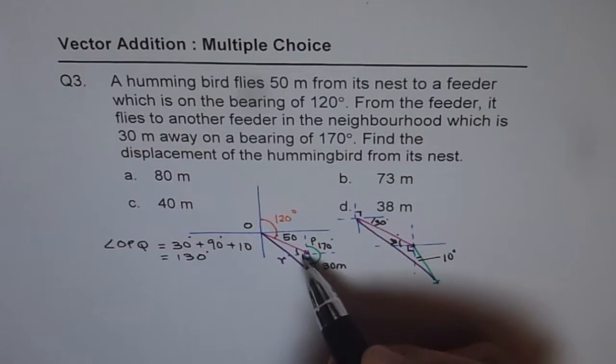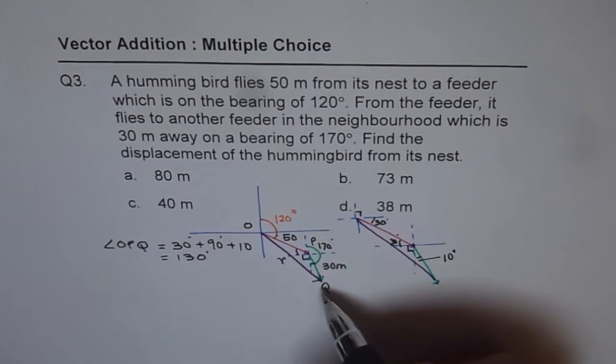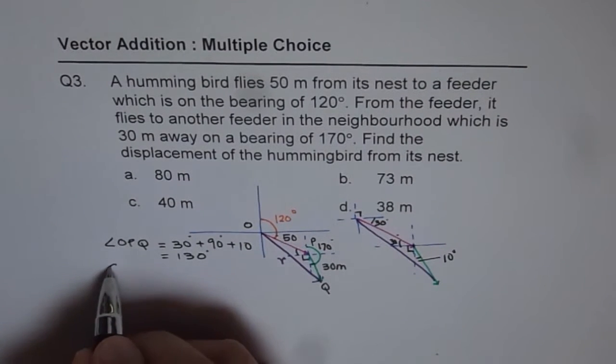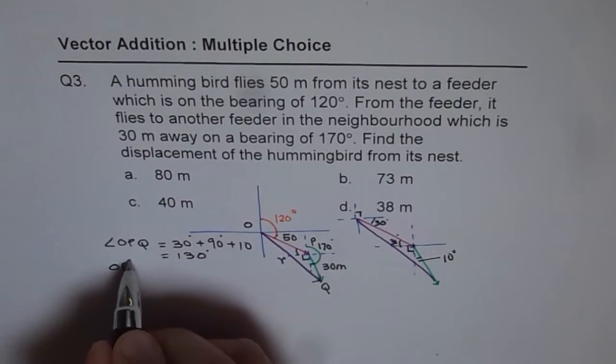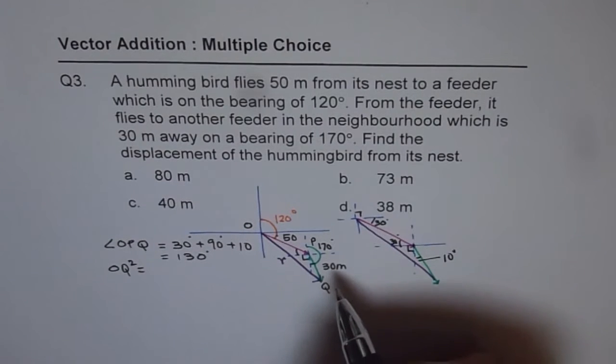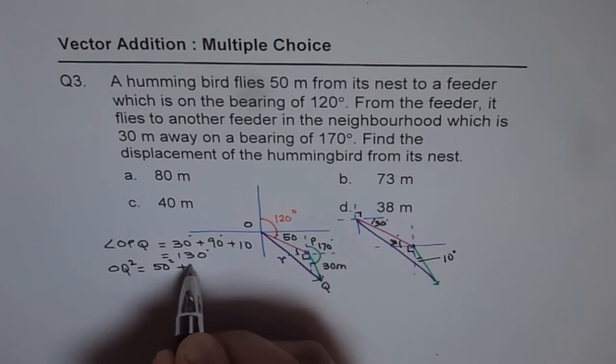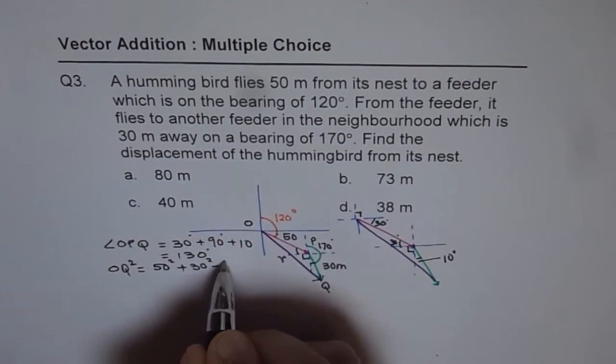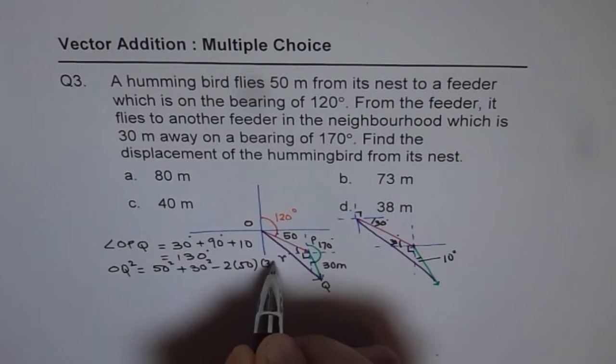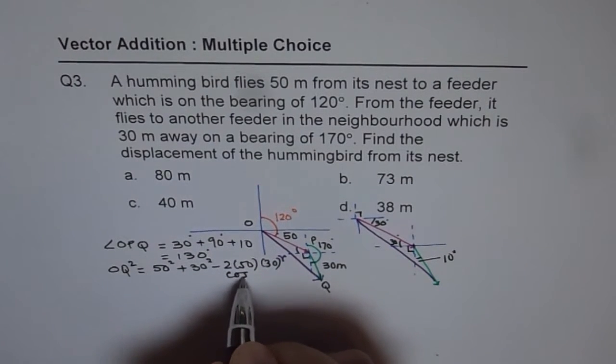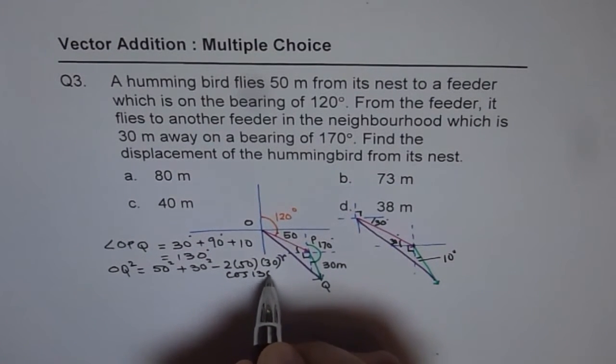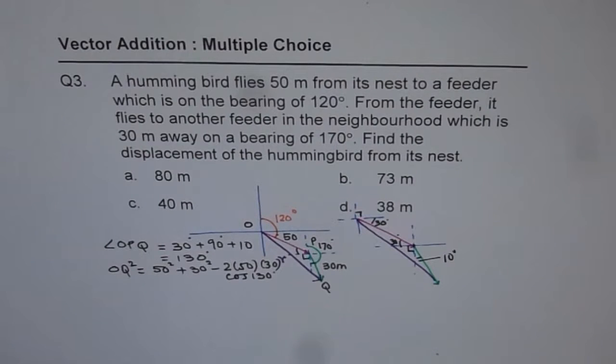Now, we know two sides and the angle in between. So, we can always find OQ. OQ square using cosine law will be equals to 50 square plus 30 square minus 2 times 50 times 30 times cos of 130 degrees. That is OQ square. Let's calculate using the calculator.